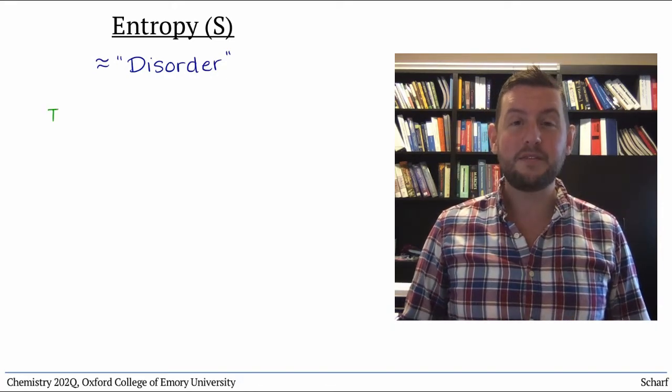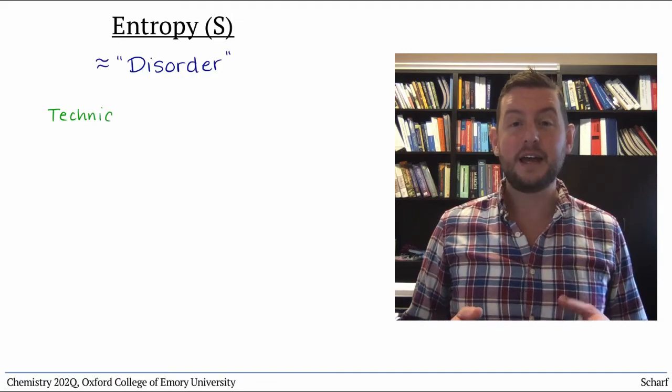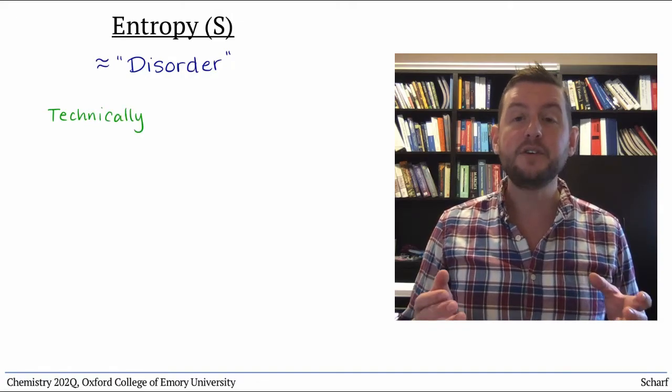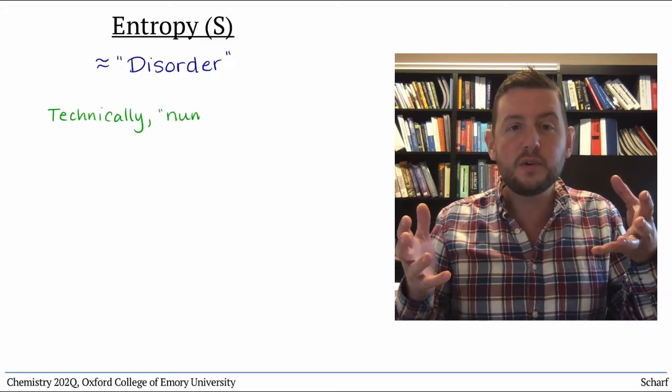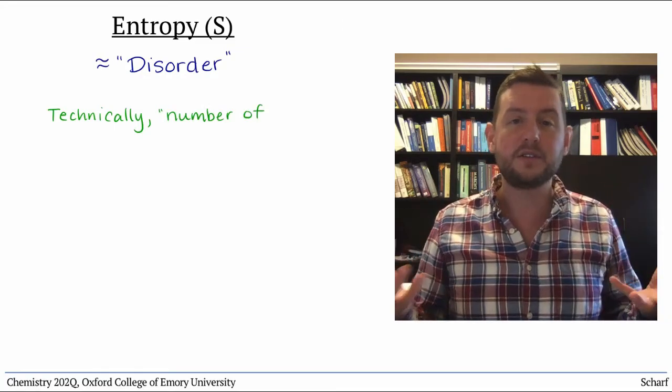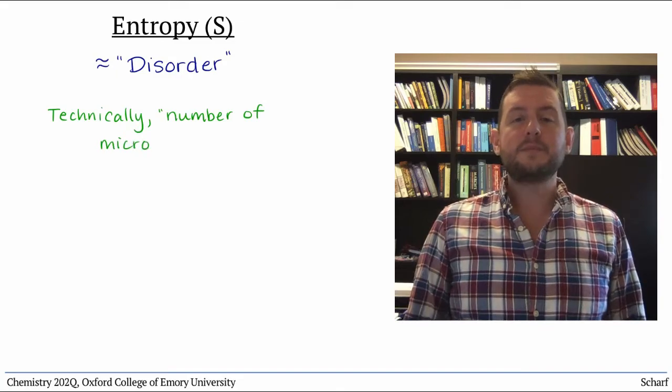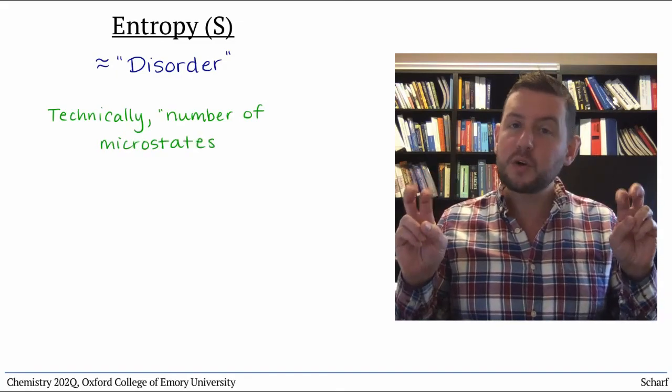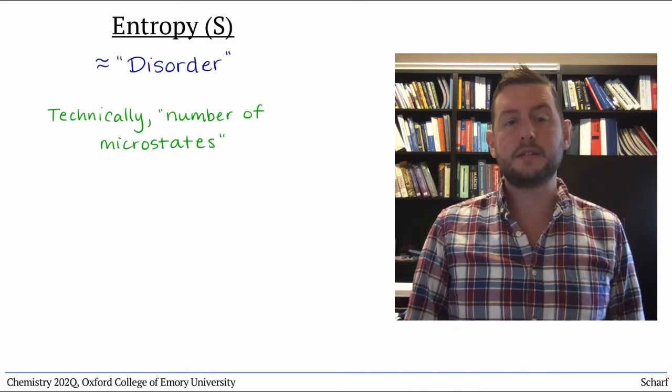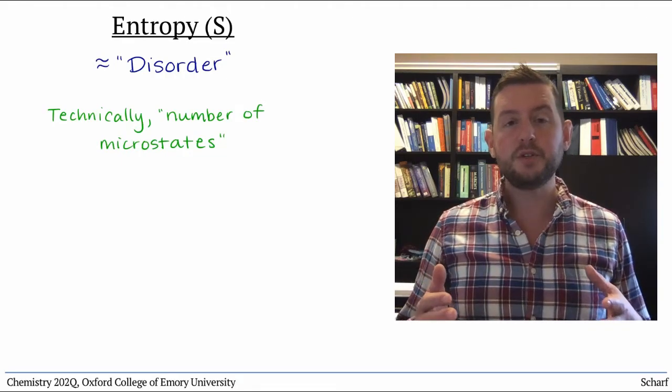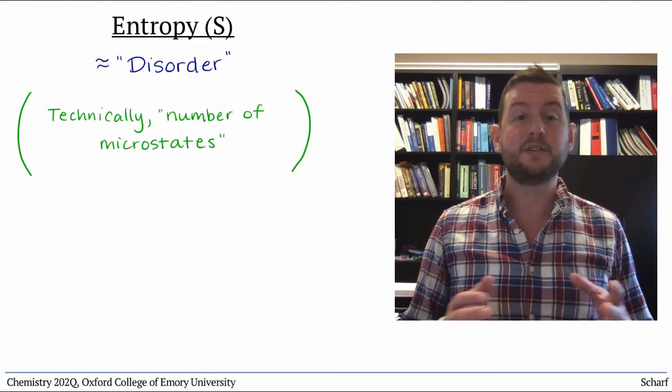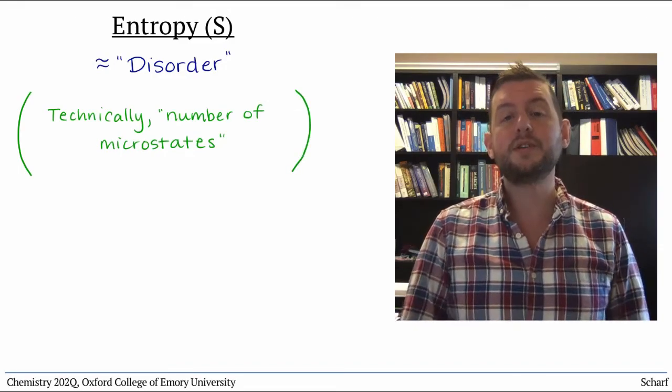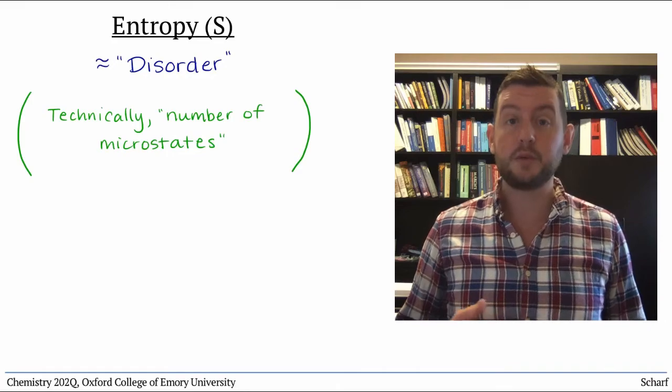On a more technical level, entropy can be defined as the number of energetically equivalent ways to arrange a particular system. This is sometimes called the number of microstates available to the system. In Chem 202, we won't be terribly concerned with this precise mathematical definition of entropy, but we will want to understand entropy on a more conceptual level.